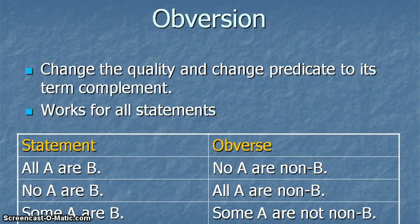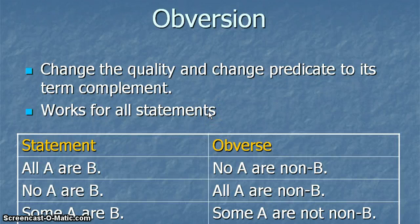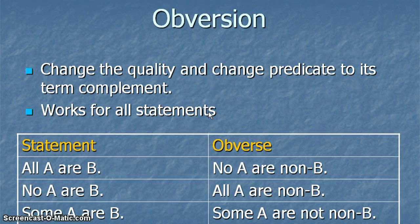Obversion. We change the quality — the quality is affirmative and negative. So all becomes no, some becomes some are not, some are not becomes some, and no becomes all. And we change the predicate to its term complement or opposite. The nice thing about obversion is that it works on all statements.